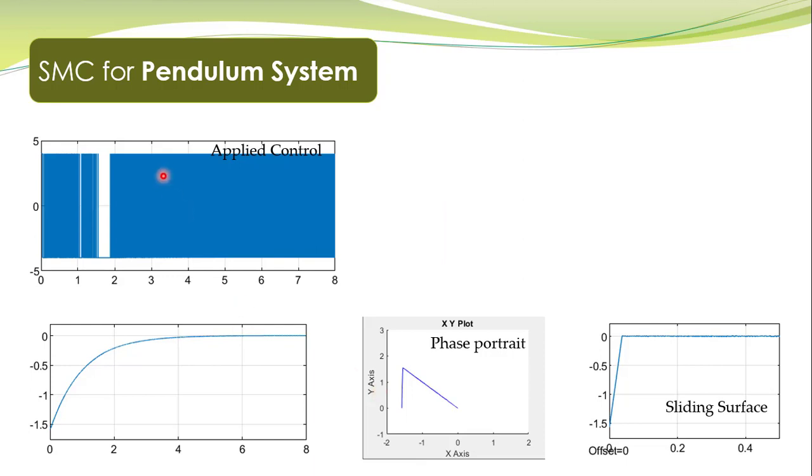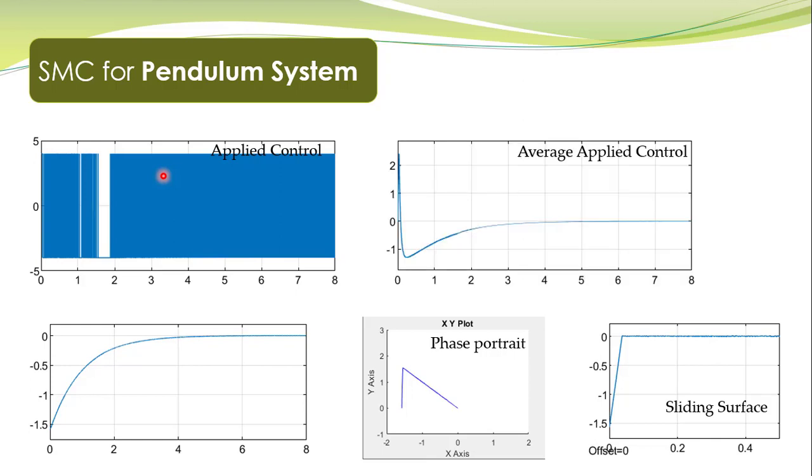This is the control action, applied control, and the physical devices will respond to the average value of this control action. Here is the average applied control which is averaged out.